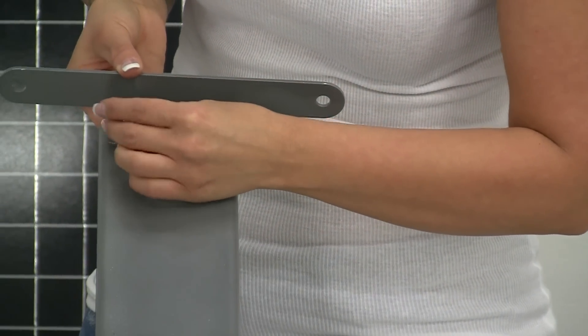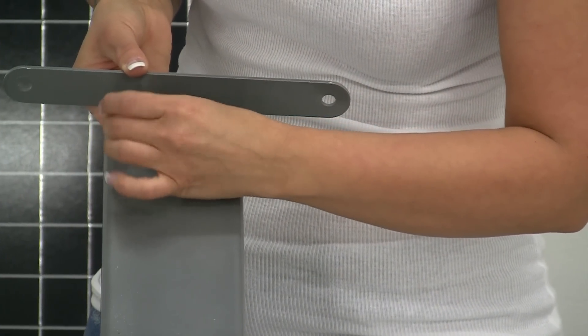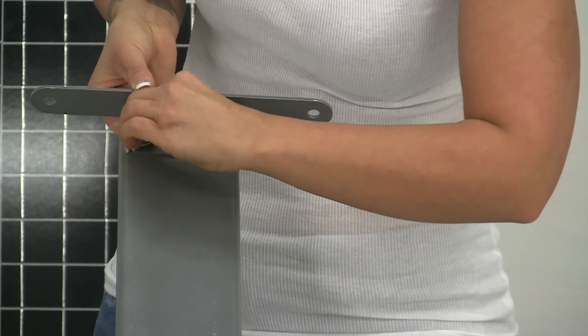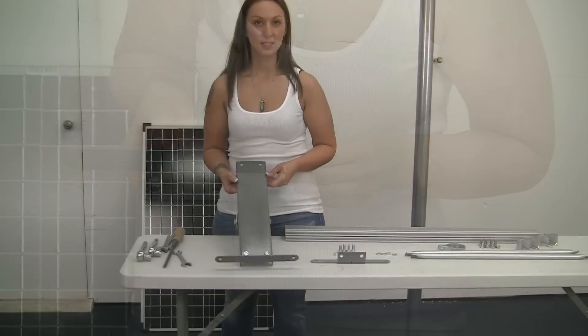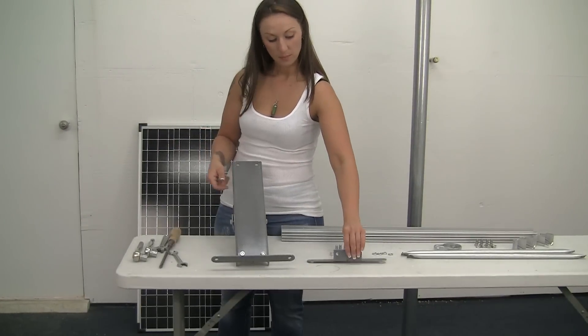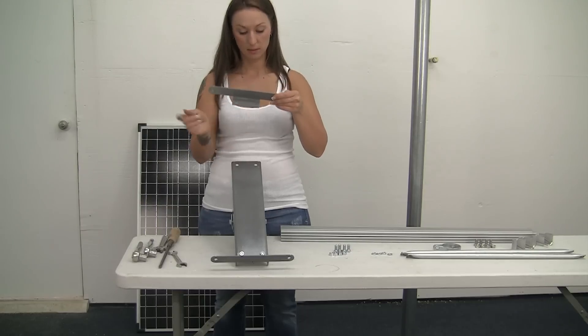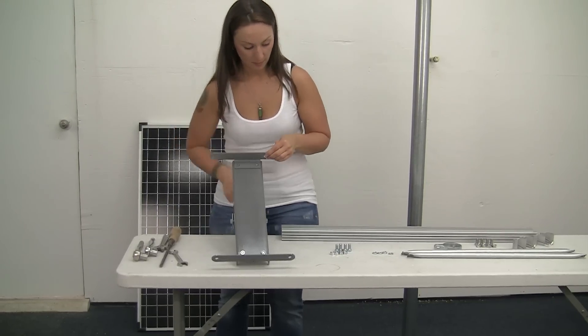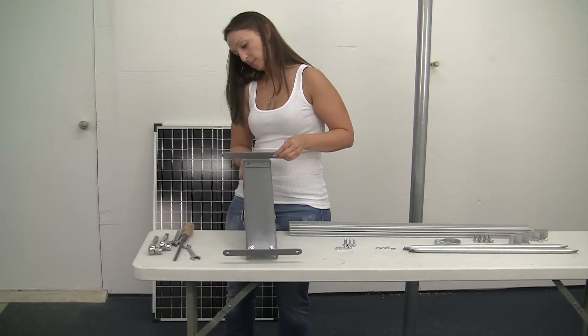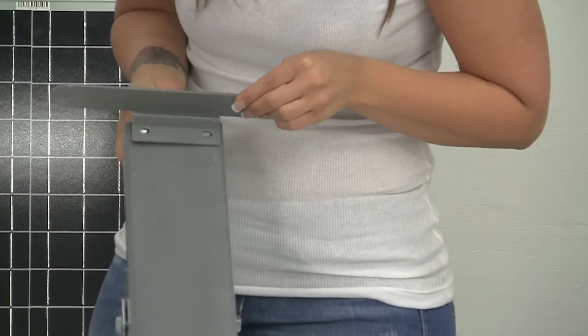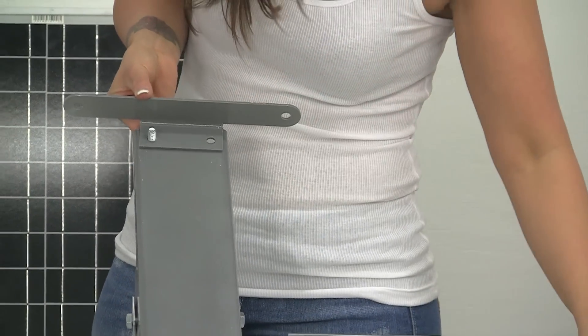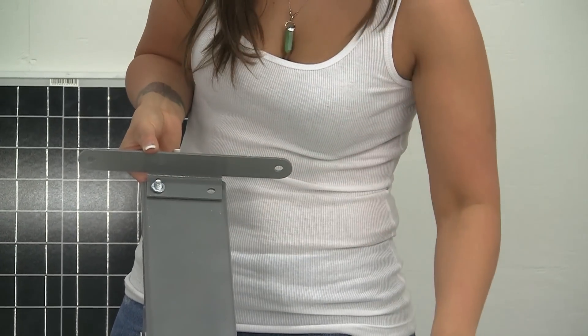Again, you guys can tighten all this up later, right before you mount on the pole. Again, as I said before, this part on the top, bolt to the bottom. Lock washer, nut.